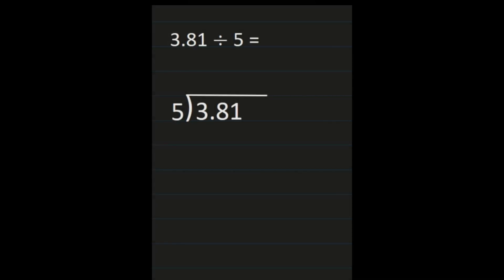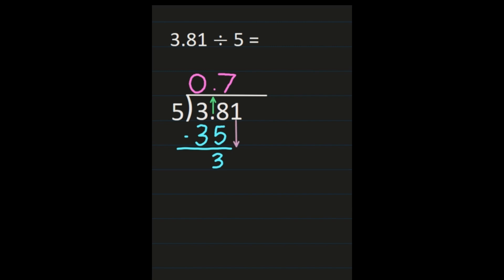Our next example, we have 3 and 81 hundredths divided by 5. The 3 and 81 hundredths goes on the inside; I'm dividing that by 5, so the 5 goes on the outside. Our steps remain the same — I need to place the decimal point in the correct place in my quotient by bringing it straight up. Then I work digit by digit. If I look at 3, dividing 3 by 5, that's 0, so I'm going to be dividing 38 by 5. 38 divided by 5 is 7, so I'm placing the 7 over the 8. Because the decimal point is there, we put the 0 in front of it as that's how we write our numbers. Then 7 times 5 is 35, and I subtract and get 3.